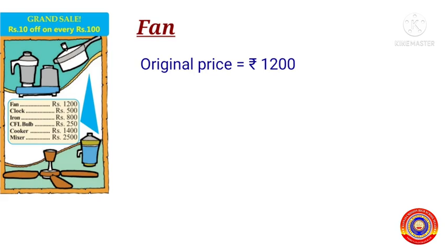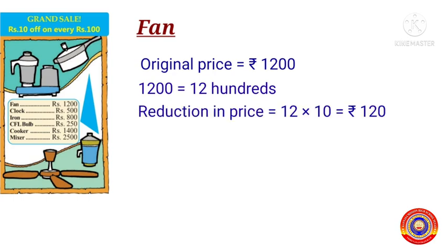The original price of a fan is equal to 1200 rupees. Now find out how many hundreds are there in 1200. 1200 is equal to 12 hundreds. Therefore the reduction in price is equal to 12 into 10, that is equal to 120 rupees.